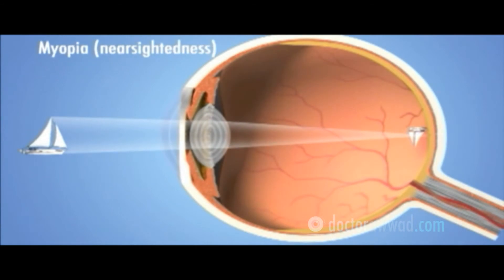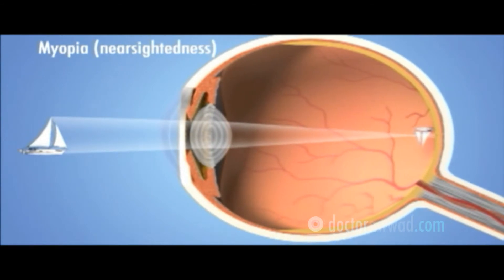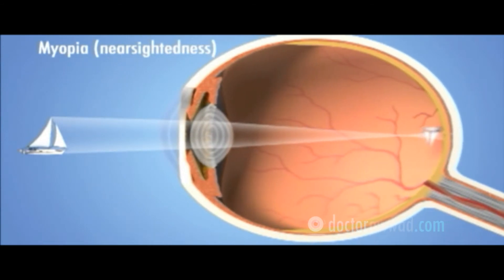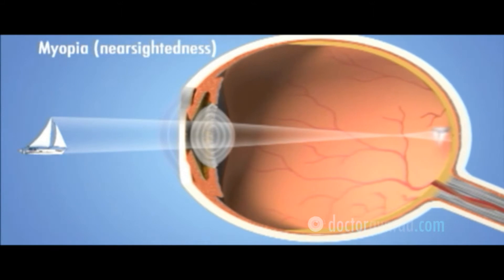Myopia, also known as nearsightedness, occurs when the distance between the cornea and retina is too long. Light rays entering the eye are focused in front of the retina, causing the image that falls on the retina to be blurred.